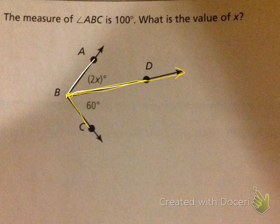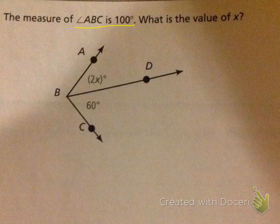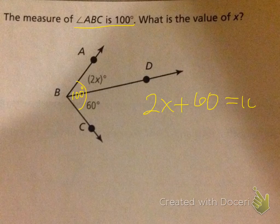Okay, so let's solve this thing. We want to find out what x is, and it says right here that the measure of angle ABC is 100. So that means this angle right here is 100. So I'm just gonna write myself a little note that those two angles together is 100. So we can do this: 2x plus 60 equals 100.